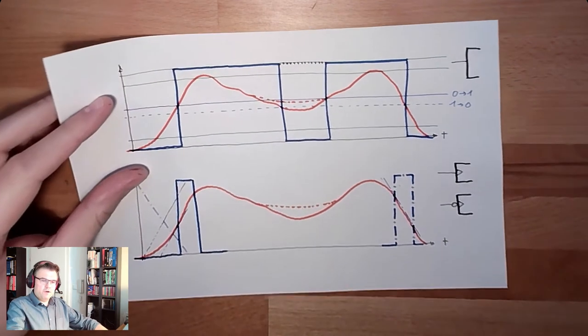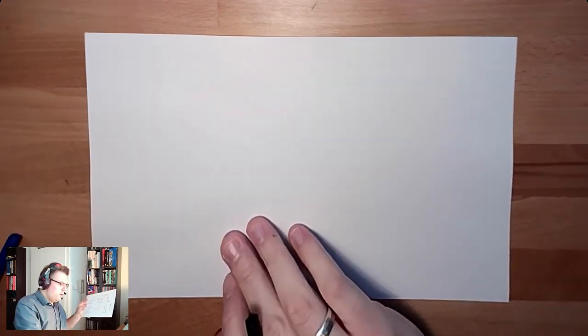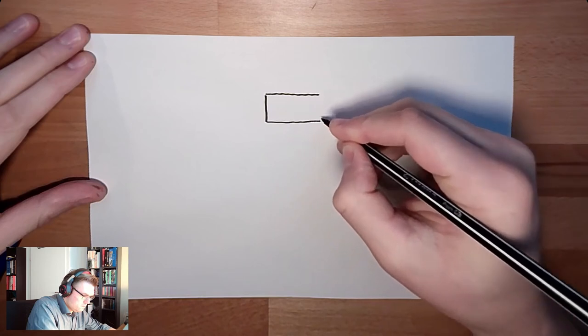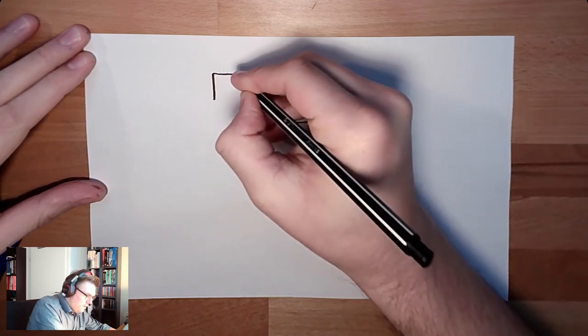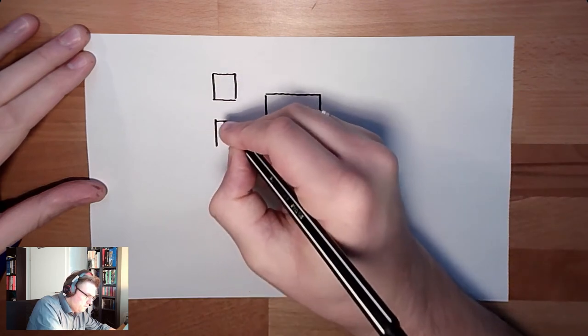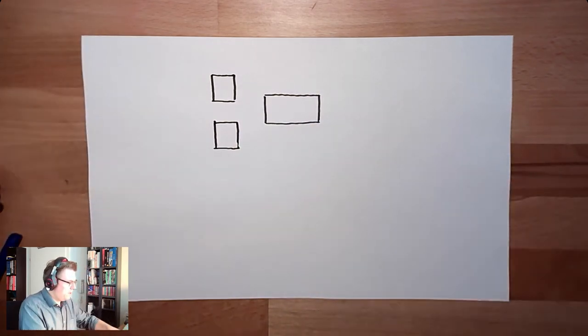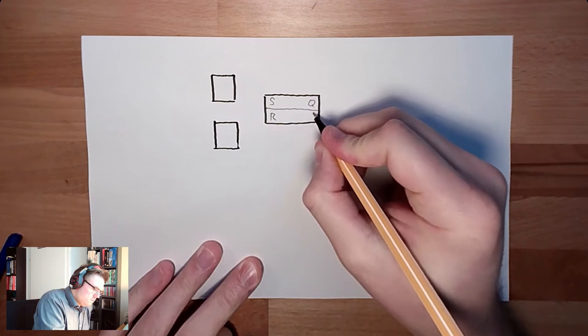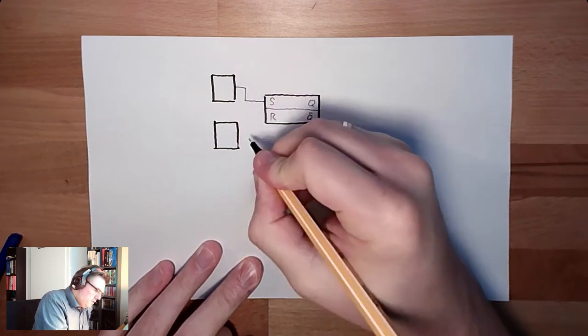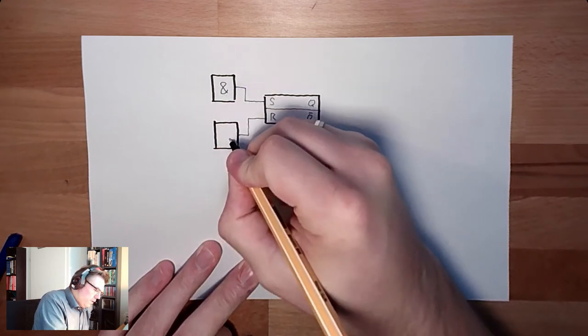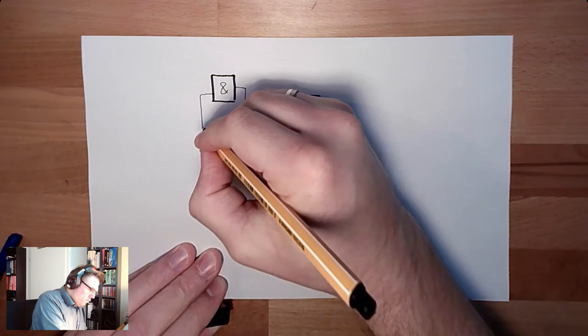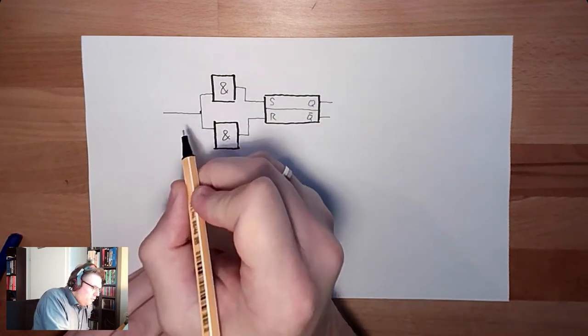What does this mean now for our memory? Usually we do have a controlled memory. So there is the latch. And there are some sort of gatekeepers before which only allows to write to the latch at a certain time. So this is the SR latch memory. These are the gatekeepers who will only allow to write at a certain time.